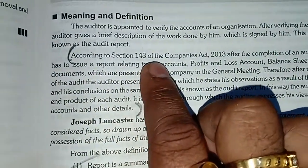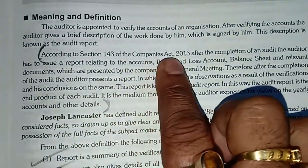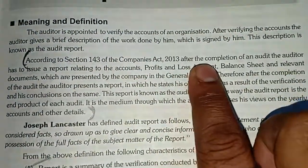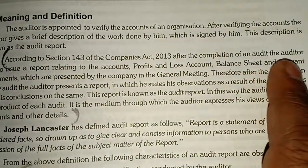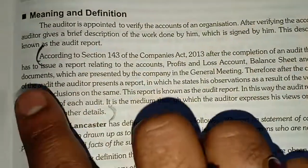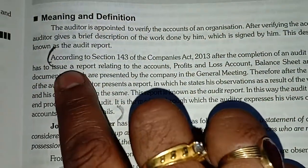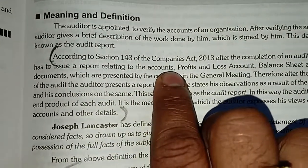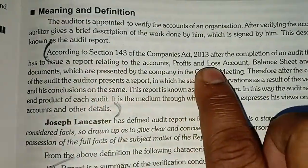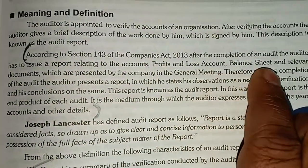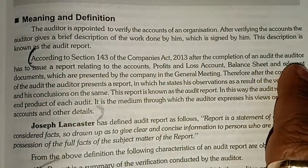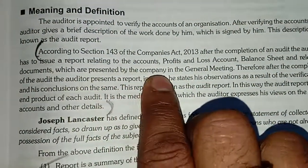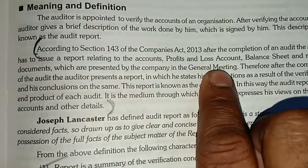According to Section 143 of the Companies Act 2013, after the completion of an audit, the auditor has to issue a report relating to the accounts, balance sheet, profit and loss account, and relevant documents which are presented by the company in the general meeting.